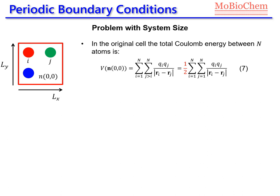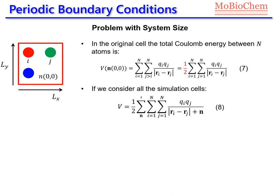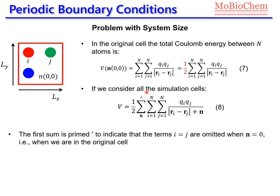This is the interaction between the atoms in the primary cell, so in cell (0,0). Now, if we consider all the other simulation cells, we need to add here a third summation which runs over all the cells in our system. This prime here indicates that the term where i equals j is not taken into account in the primary cell. Because in the primary cell, an atom cannot interact with itself, but the atom i in the primary cell can interact with atom i located in other cells. This prime only affects the primary cell.